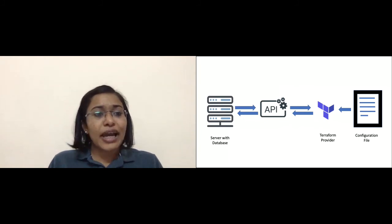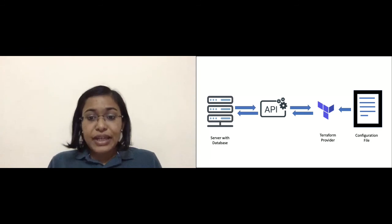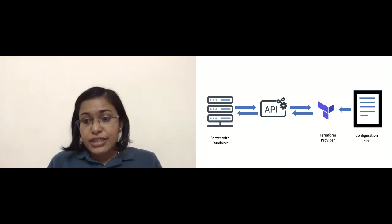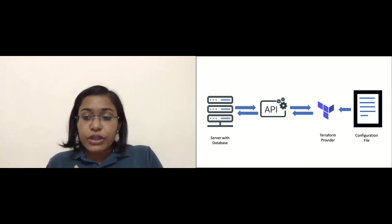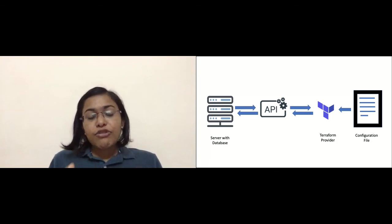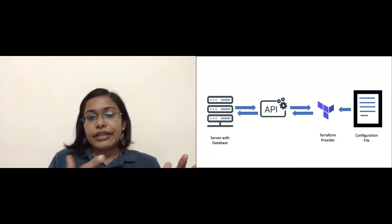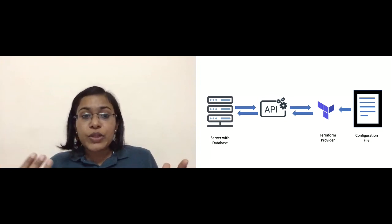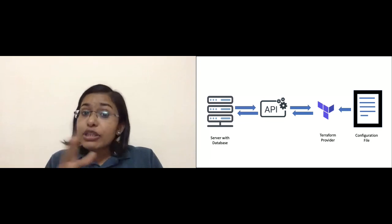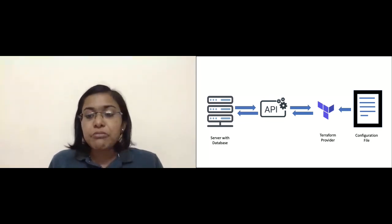Terraform is basically a giant state machine. It sits in front of the API layer, allowing users to manage the application's objects in a more thorough way through a configuration file. Hence Terraform is responsible for marshalling or unmarshalling of responses and requests for the API, by taking data for the request from the configuration files provided by the user.